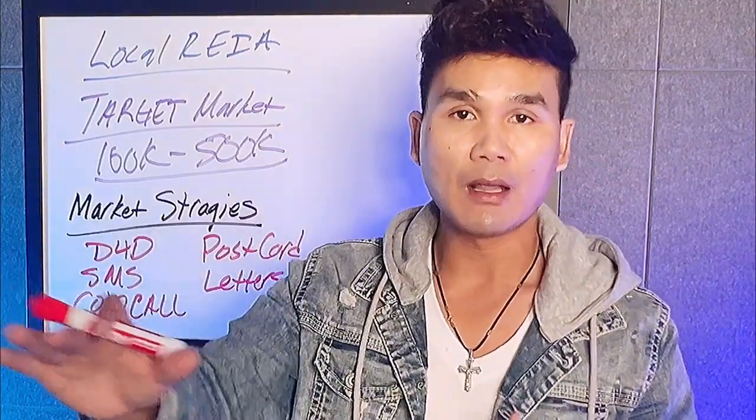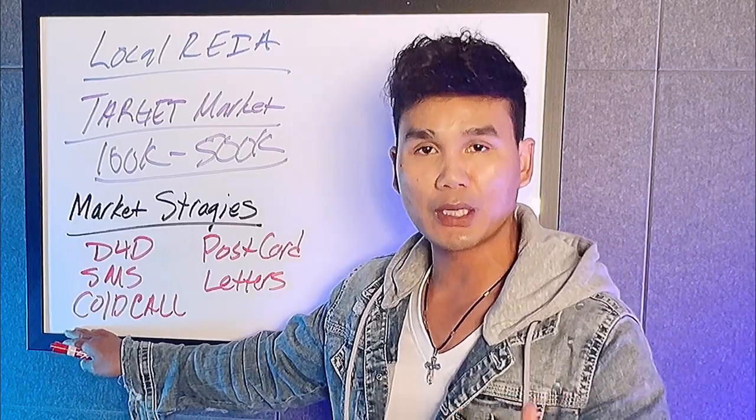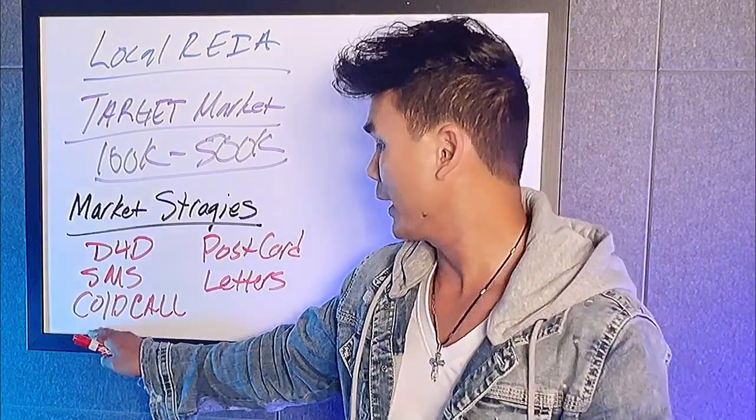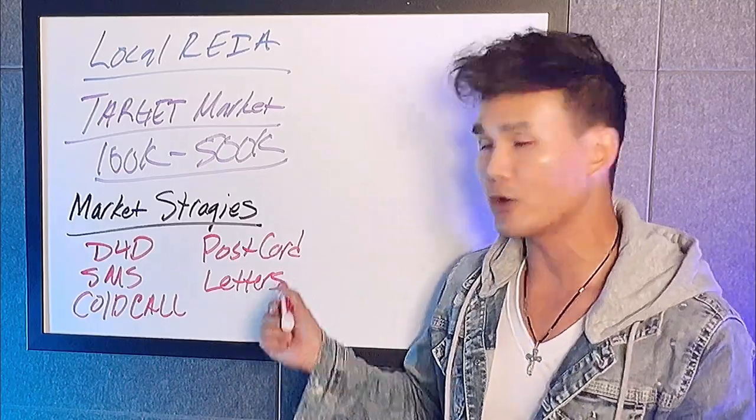The next strategy is SMS — basically sending out a bunch of text messages to random strangers letting them know you're interested in buying their property and making a cash offer. The one that works really, really well for us is cold calling — get a list and just get on the phone and call. Next is sending out postcards or letters, which is called direct mail. Postcards cost about 50 cents each and letters run about a dollar, so this requires a bit more of a budget.